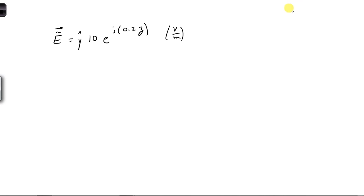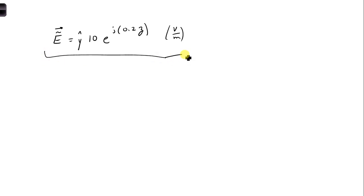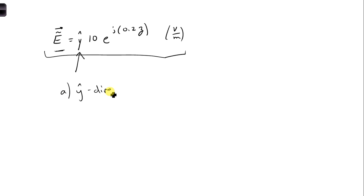In part A, we can get the orientation of the electric field from the expression we have for the electric field, which is given here. And specifically right here, this y-hat tells us in what direction the electric field is pointing. So we would say the y-hat direction for part A.